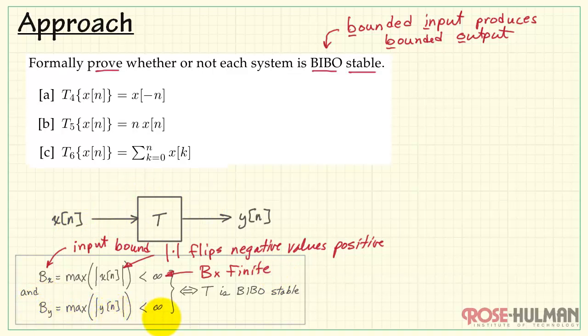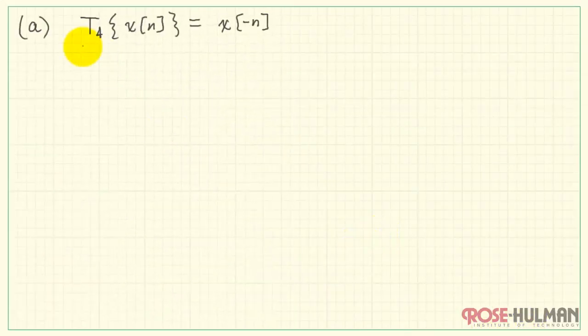We then calculate the bound on the output and check. Is that also finite? If so, we say that our system is bounded input, bounded output, stable. Alright, let's move along to the detailed solution.